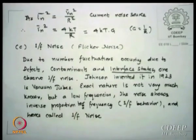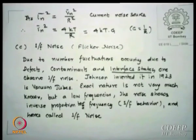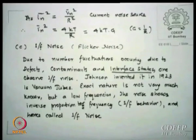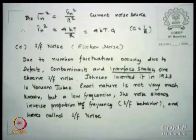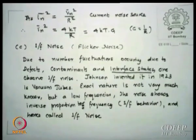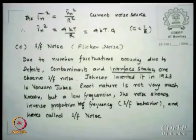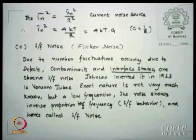What is stated is that due to number fluctuations occurring because of defects, contaminants, and interface state density, one observes 1/f noise. In the case of a MOS transistor, the silicon and silicon dioxide interface — between insulator and semiconductor — is where current transport occurs. Any change in the interface state density changes the relaxation time associated with this. Since there is a time associated with surface recombinations, variation there leads to a noise component.